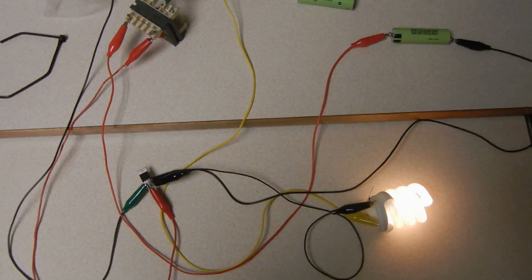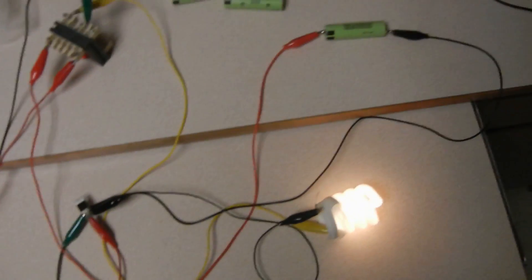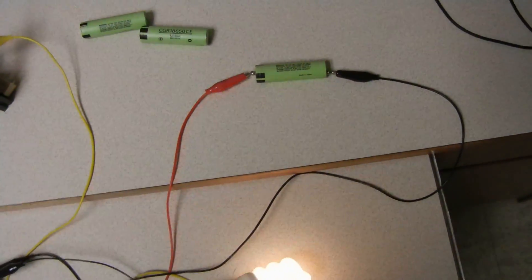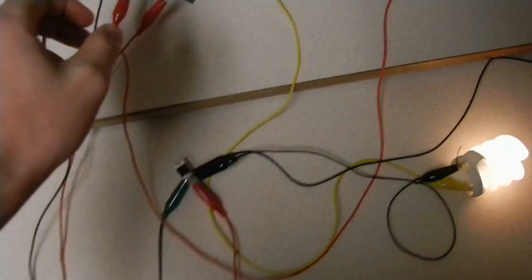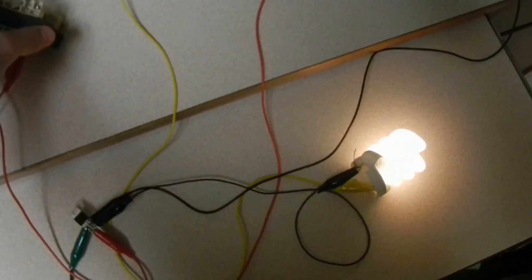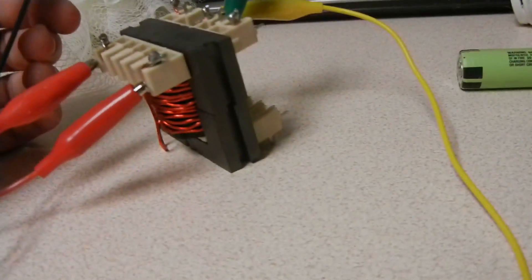Here's my replication of Laser Saver's new super Joule ringer circuit running off a 3.7 volt lithium battery. Right now it's drawing about 150 milliamps, and this is the transformer from his original circuit.